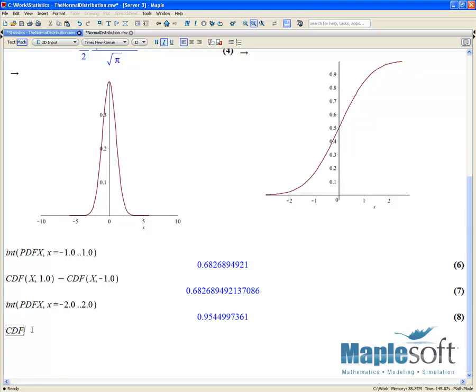And this is again the same as doing CDF of X of 2.0 minus the CDF of X minus 2.0.